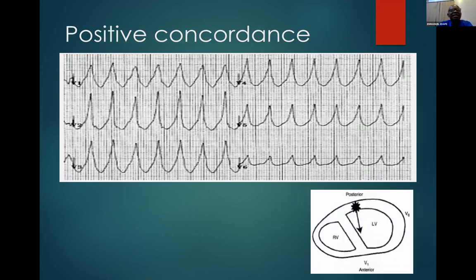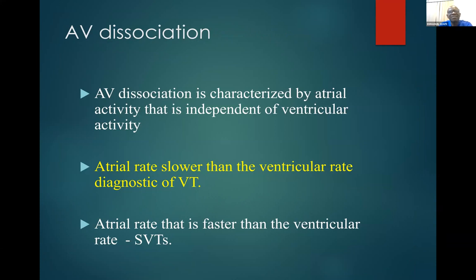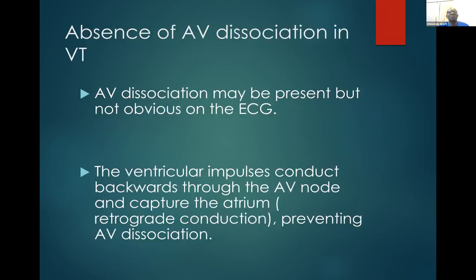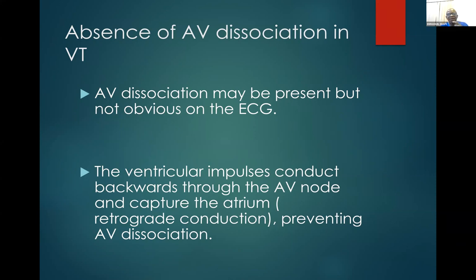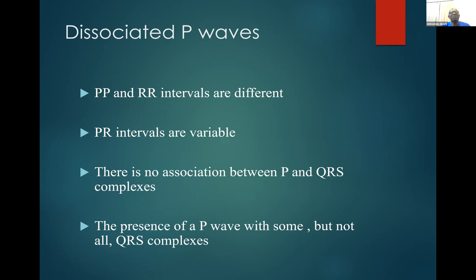AV dissociation is characterized by atrial activity independent of ventricular activity. An atrial rate slower than the ventricular rate is diagnostic of VT, while an atrial rate faster than ventricular rate is diagnostic of SVT. Absence of visible AV dissociation in VT can occur because it may not be obvious on the ECG, or because the ventricular impulse conducts backward through the AV node to capture the atrium — retrograde conduction — thereby preventing visible AV dissociation.